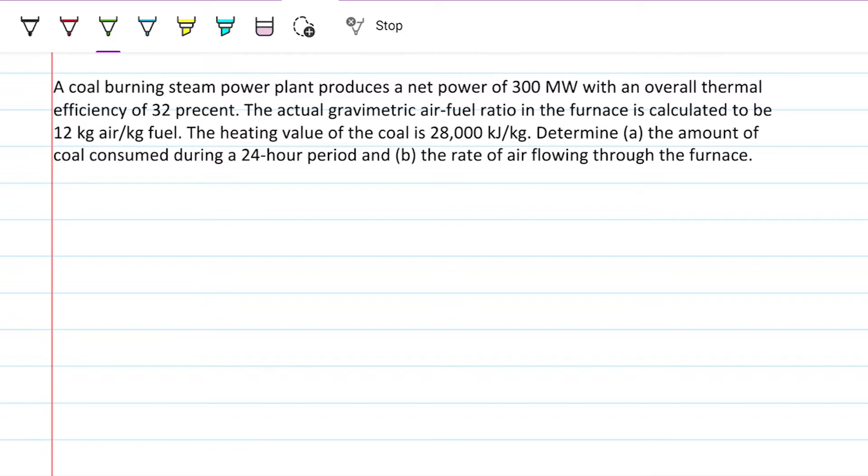So this is problem 6.25 and it reads like so. A coal burning steam power plant produces a net power of 300 megawatts with an overall thermal efficiency of 32 percent. The actual gravimetric air-fuel ratio in the furnace is calculated to be 12 kilograms of air per kilogram of fuel. The heating value of coal is 28,000 kilojoules per kilogram. Determine (a) the amount of coal consumed during a 24-hour period and (b) the rate of air flowing through the furnace.